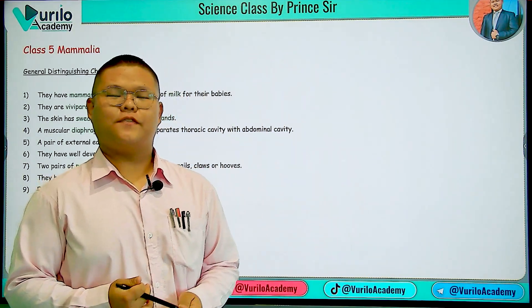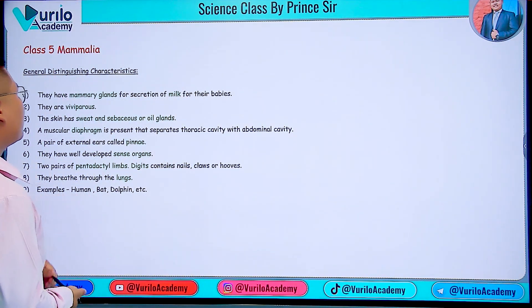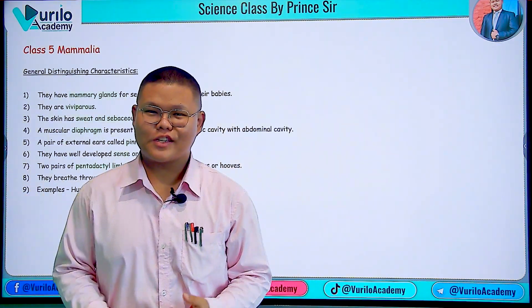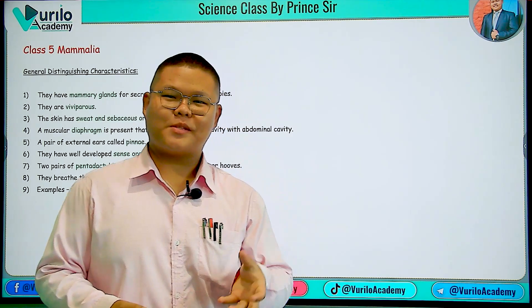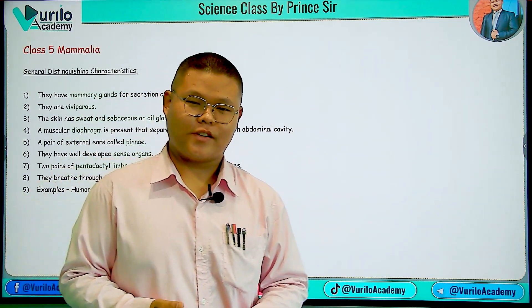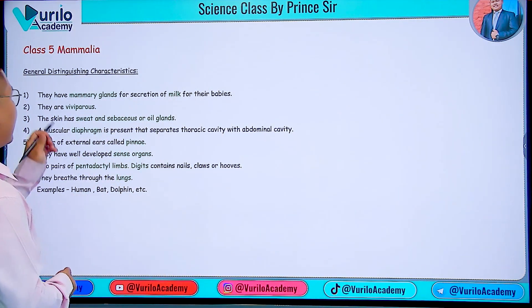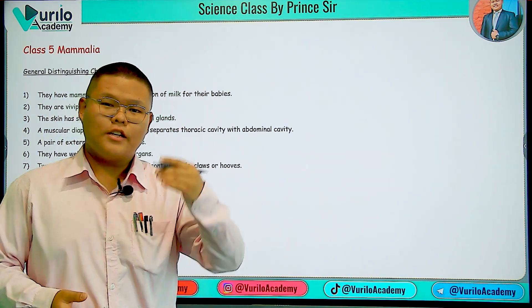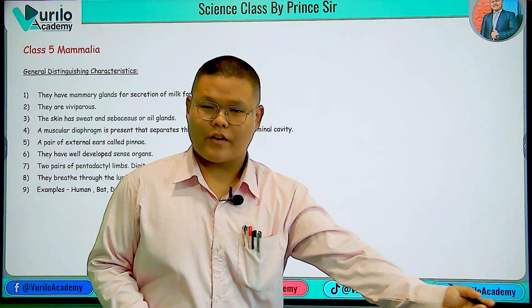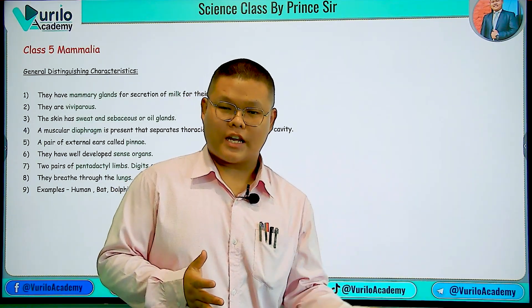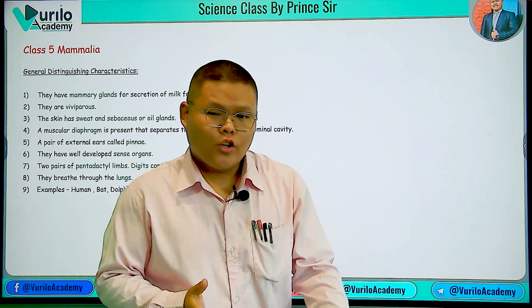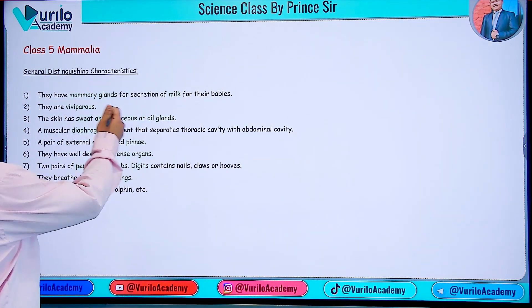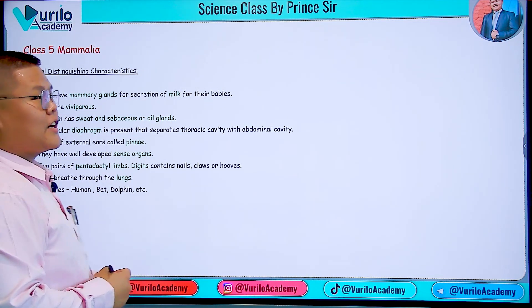We are in the last class — Class 5, Mammalia. Let's start with its general distinguishing characteristics. Mammals have mammary glands, which basically secrete milk. These glands help in secreting milk for the growth and development of the young ones, just like a mother feeding her baby.